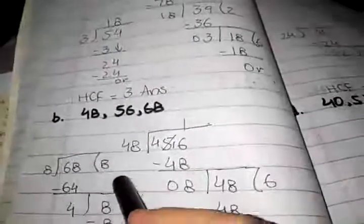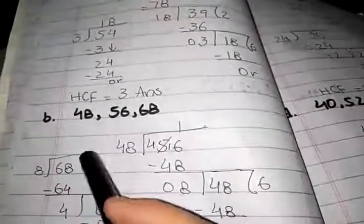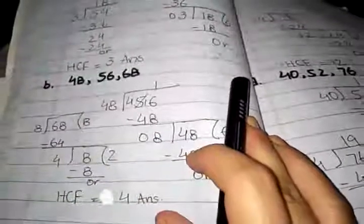Now we divide 8 on 68. 8 eights are 64. 8 minus 4 is 4, 6 minus 6 is 0. 8 is next dividend. 4 twos are 8. And 4 is the highest common factor of 48, 56, and 68 by division method.